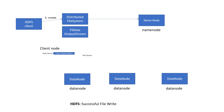The name node is where we have all the metadata information. Once the name node receives that request, it will first check whether the client has write permission or read permission. If the client doesn't have write permission, it will simply reject the request. If the client does have write permission, it will allow the write to proceed.